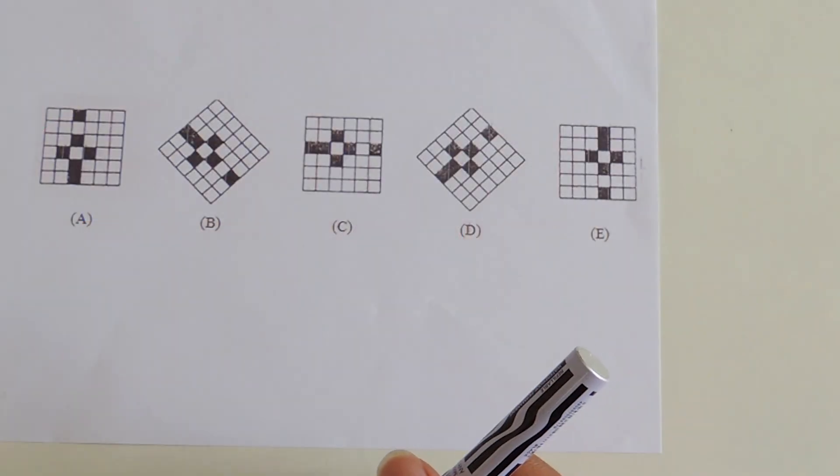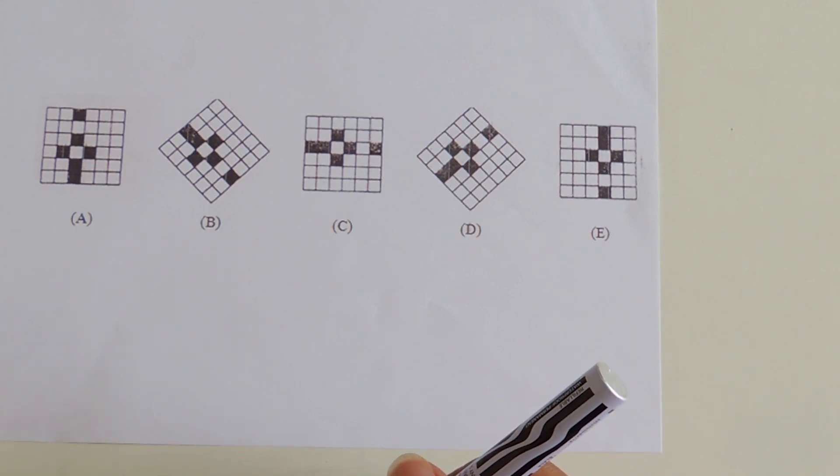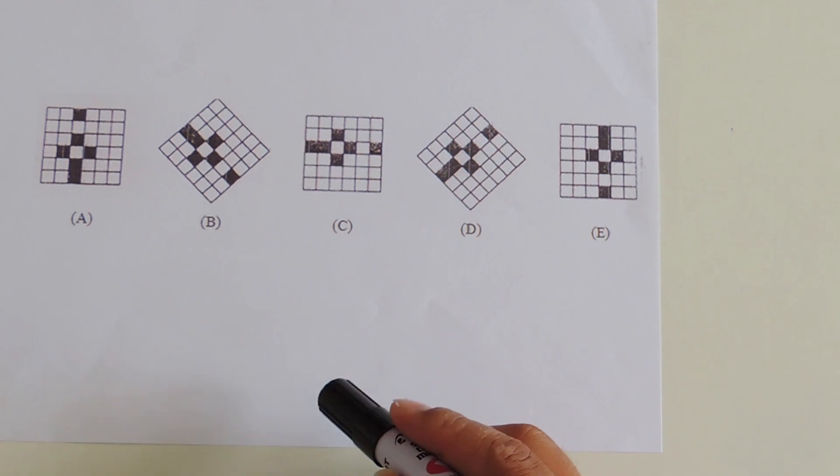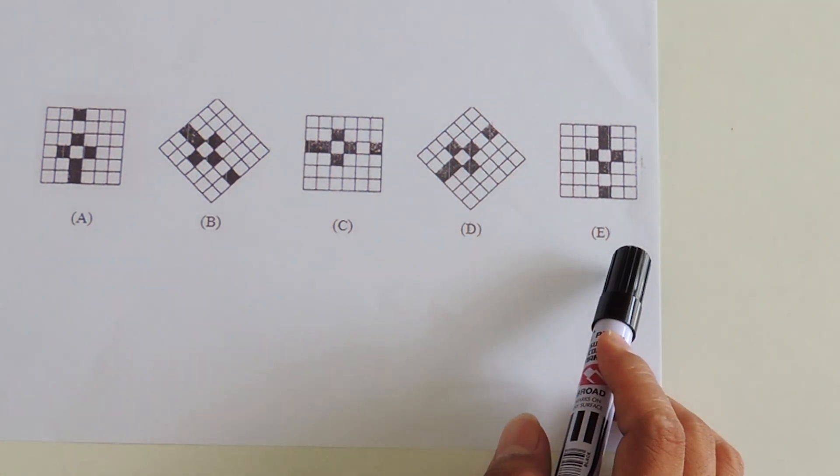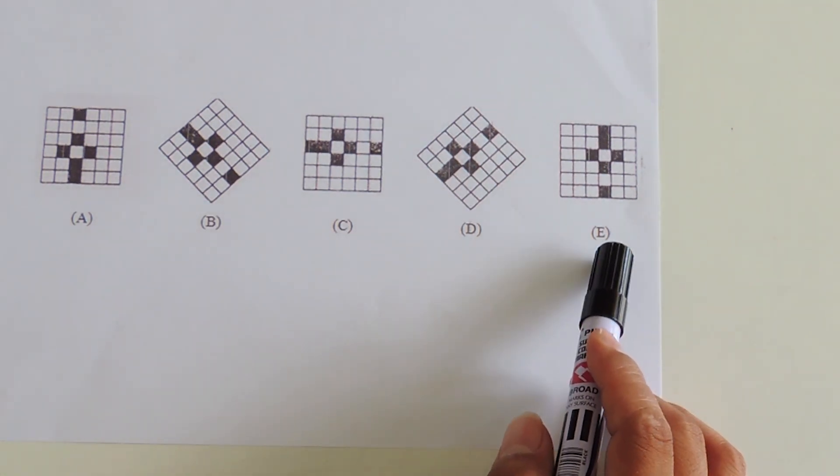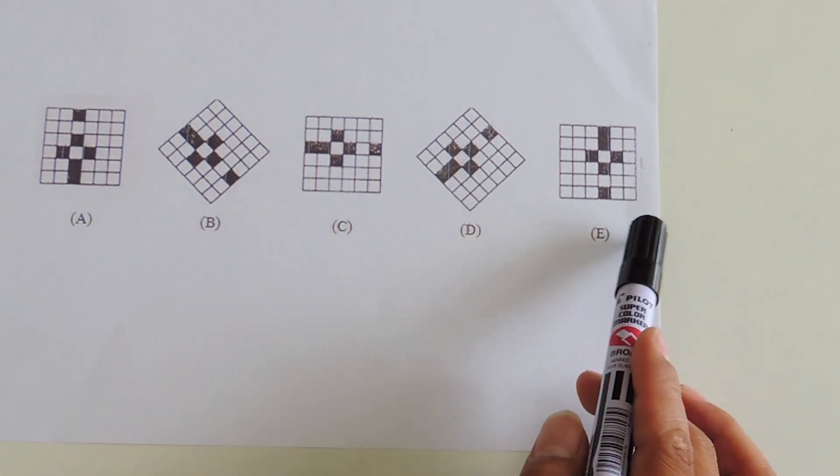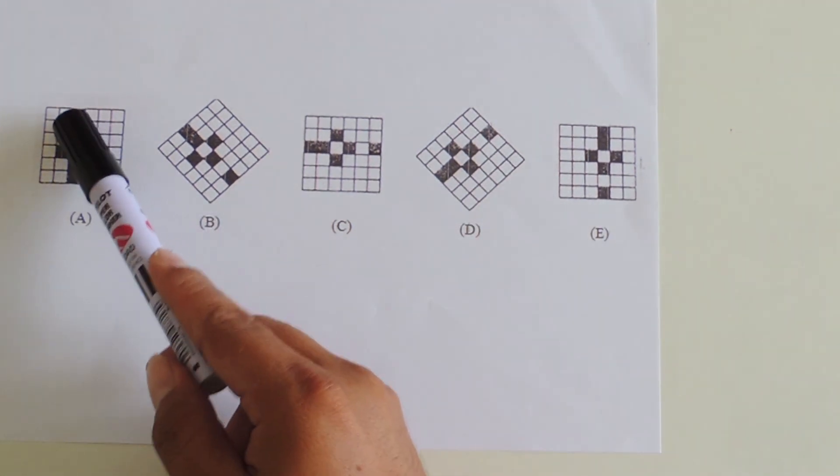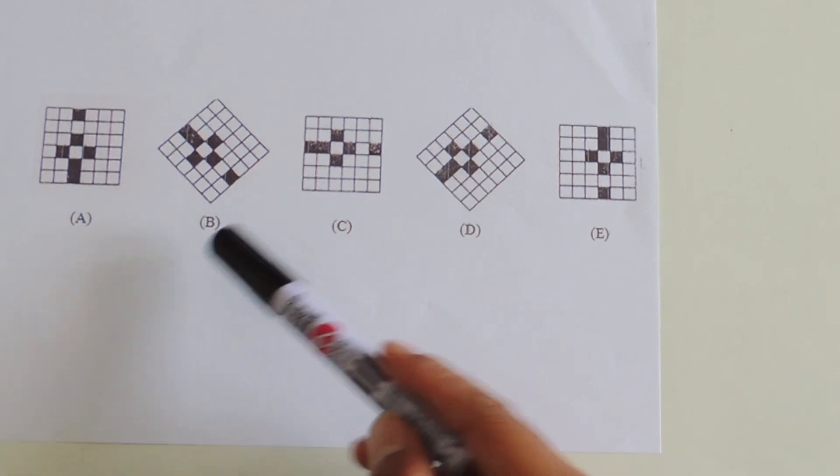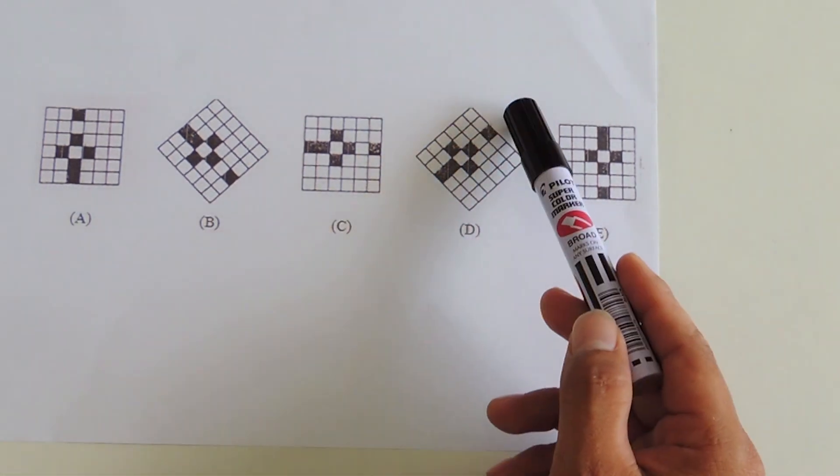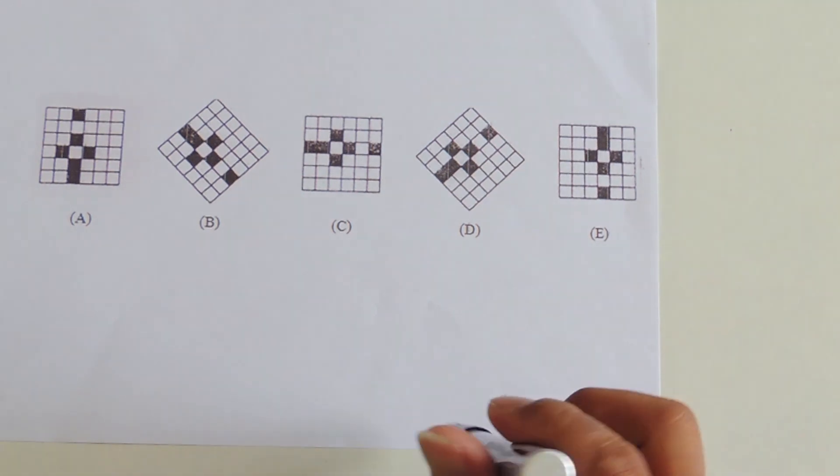Here's our last example for figure grouping. Options A, E, and C have straight orientations, while B and D appear to be diagonal.